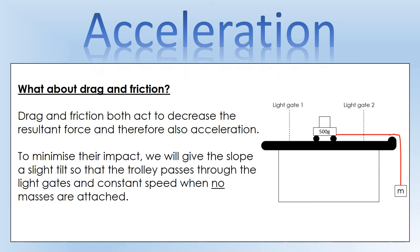What about drag and friction? We're saying the resultant force is the weight force of the falling masses, but there are going to be friction and drag forces acting as well. We can't eliminate those completely. One suggestion is to use an air track to minimize friction, but that's not practical here. Instead, we give the track a slight slope so that as the trolley rolls through the two light gates without any masses on the end, it stays at constant speed — meaning the tilt offsets the friction and drag.